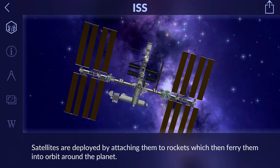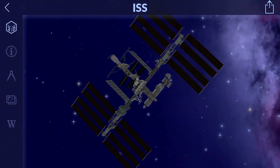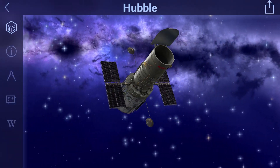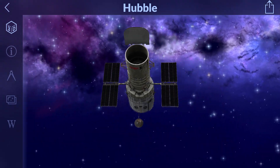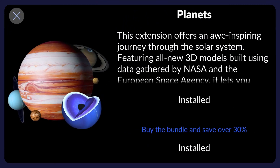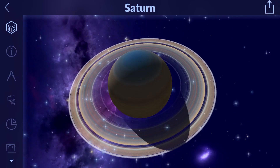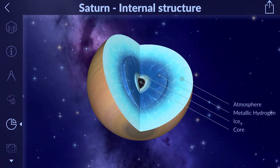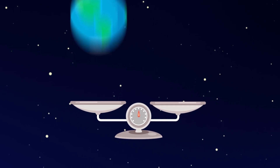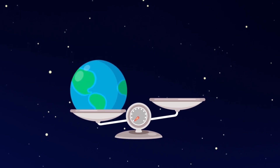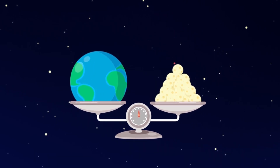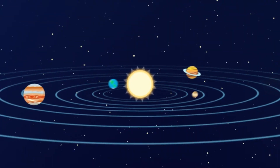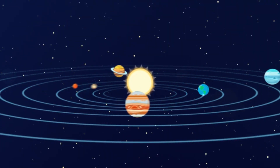The Satellites in-app upgrade lets you add the ISS, Hubble, and other satellites. The Planets Pack gives you access to the planets of the solar system and allows you to explore their surface, internal structure, and 3D models in detail. The Space Cartoons upgrade contains a collection of educational cartoons about planets, stars, and other celestial objects for the youngest little space explorers.